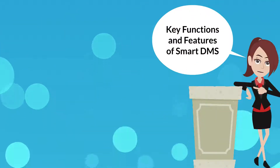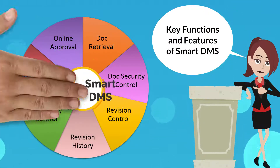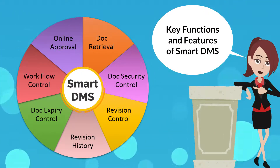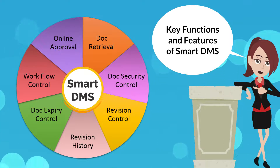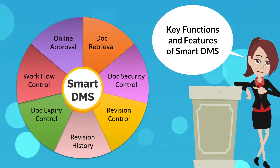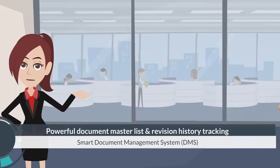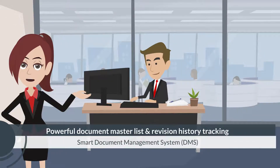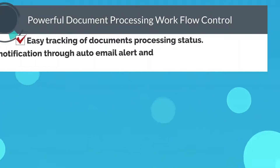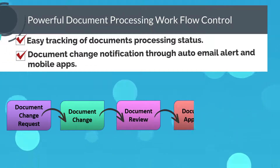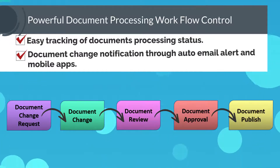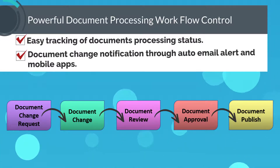Smart DMS is designed to automate the whole process of document management. It can keep track of revision changes for various types of documents. We can track the document revision change history quickly and easily, with powerful document access and acknowledgement control functions. Smart DMS allows users to keep track of document processing status easily, and document change or approval notifications will be triggered through auto-email alerts.